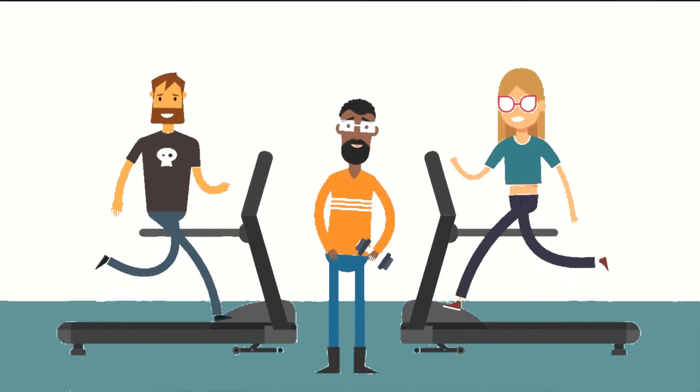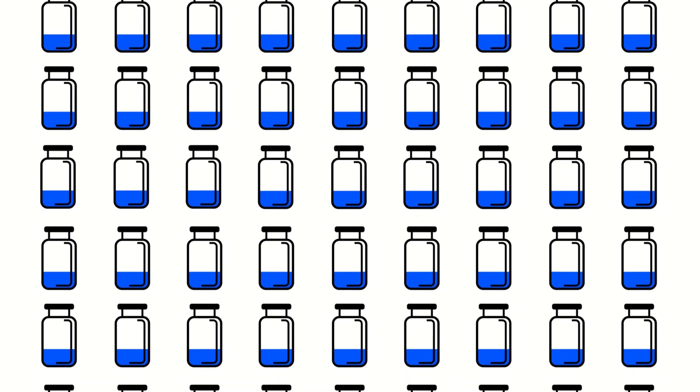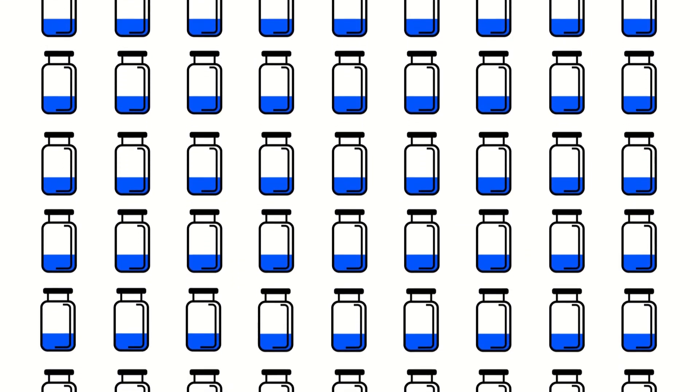That is where vaccines come in. Vaccines help develop immunity by imitating an infection. This type of infection almost never causes illness, but it will help the immune system to produce antibodies for it.